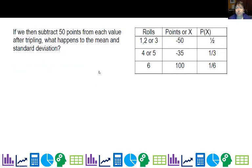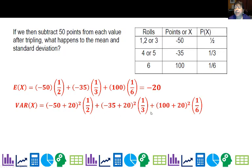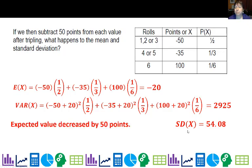Let's subtract 50 points from each value after tripling. What happens to the mean and standard deviation? Now I have these values, from 150 point gain to minus 20. My variance is the same number, and my standard deviation is unchanged. My expected value decreases by 50 points because the distribution shifts down. But the spread, the standard deviation, remains unchanged because from smallest to largest, the spread is still 150 points apart.